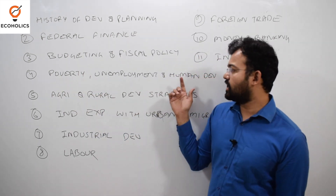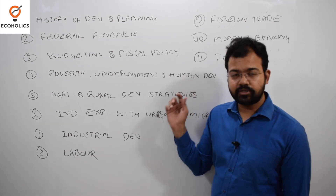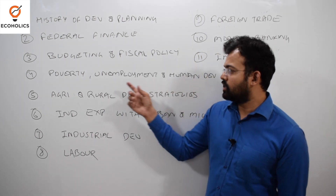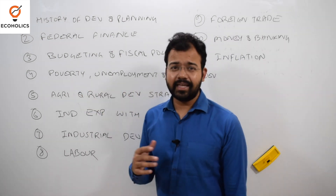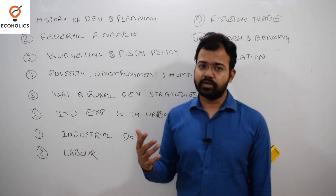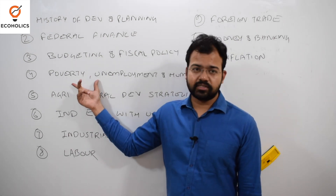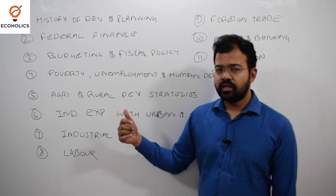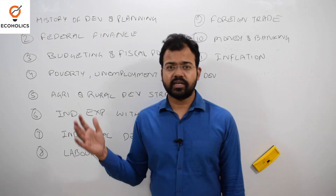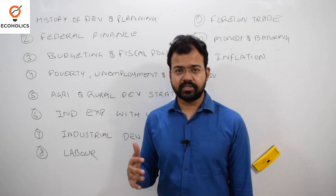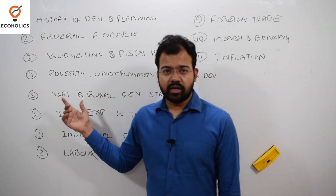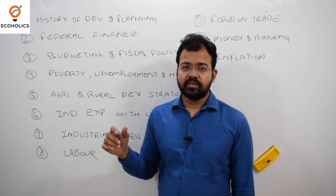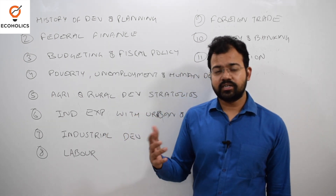Regarding poverty, unemployment, and human development: for human development, refer to the UNDP website and follow some newspapers. For poverty and unemployment, any decent textbook like Mishra and Puri or Uma Kapila will suffice. For agriculture and rural development strategy, Uma Kapila is again the best book — it gives insights from 1947 to the present. You can also refer to EPW (Economic and Political Weekly) articles; the latest four editions are available for free download.